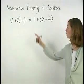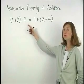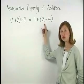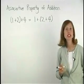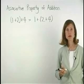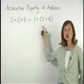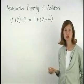The problem (1+2)+4 = 1+(2+4) demonstrates the associative property of addition. Notice that the addends are the same on both sides of the equal sign: 1 plus 2 plus 4.